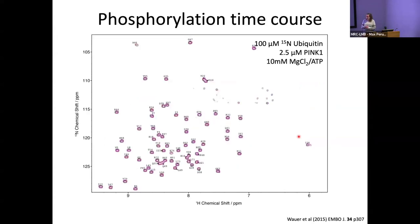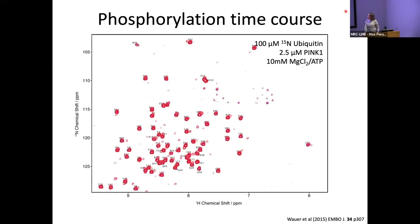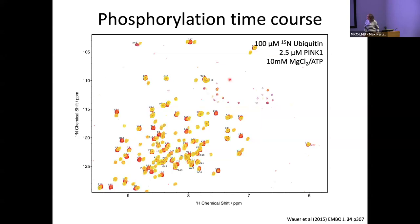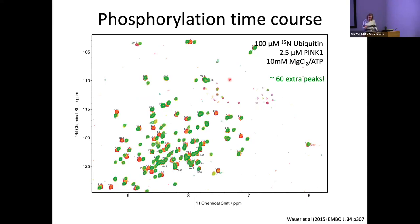Here's wild type ubiquitin with serine 65 highlighted. With a time course of phosphorylation — collecting one HSQC every seven minutes — we can see serine 65 disappearing and extra peaks appearing due to the change in chemical environment. At the end, serine 65 has completely disappeared, which is what we'd expect. But interestingly we actually had 60 extra peaks, and we didn't really understand what was going on, because you should lose one peak and gain another.